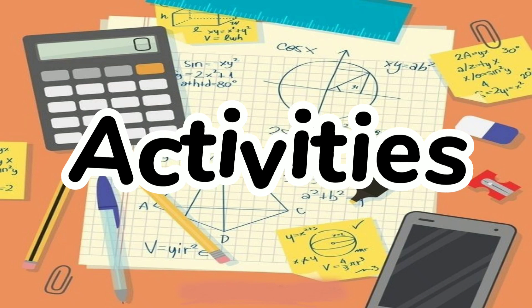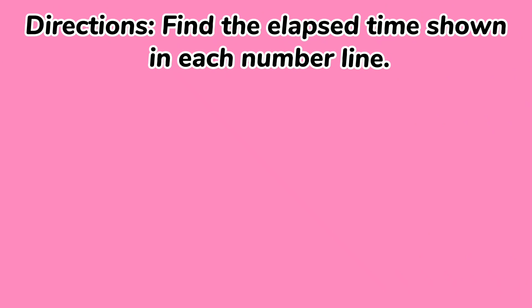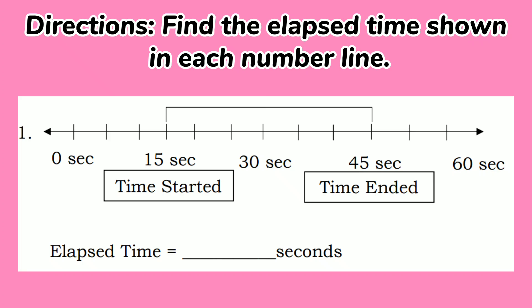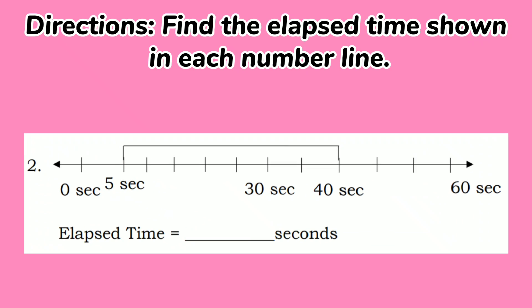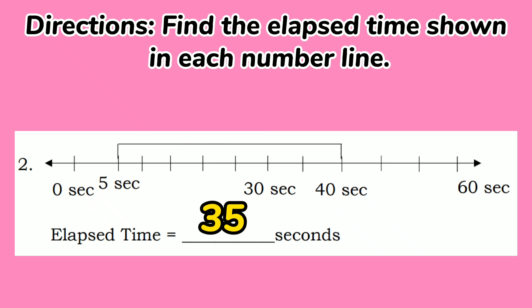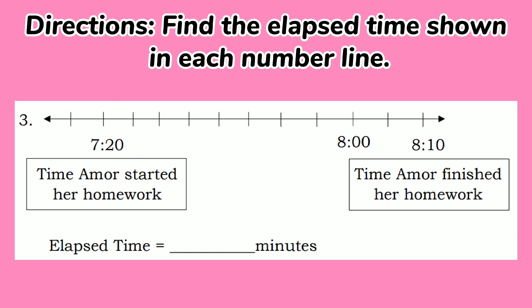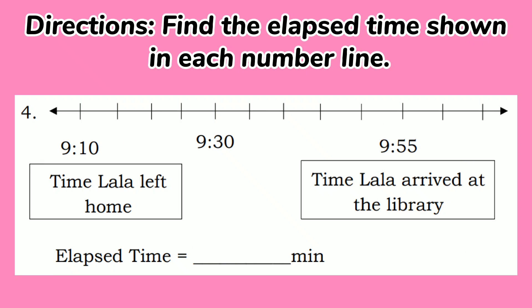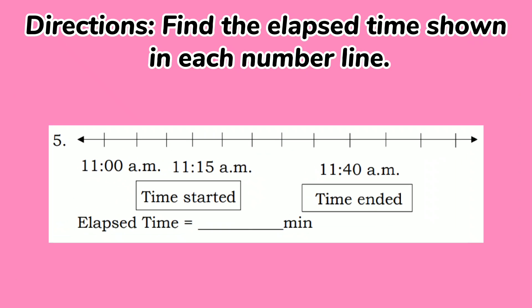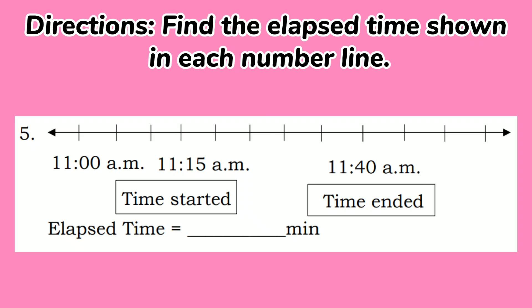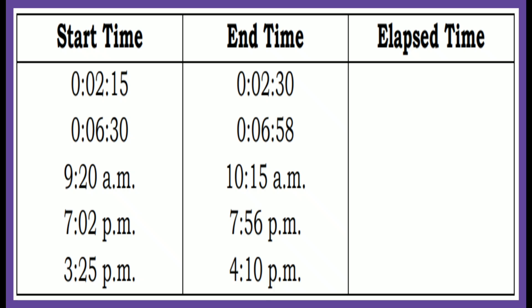Now that you already know how to find the elapsed time, let's have these activities. For your first activity, find the elapsed time shown in each number line. Number 1: from 15 seconds to 45 seconds, the elapsed time is 30 seconds. Number 2: the answer is 35 seconds. Number 3: from 7:20 to 8:10, the elapsed time is 50 minutes. Number 4: Lala left home at 9:10 and arrived at the library at 9:55 — the elapsed time is 45 minutes. Number 5: from 11:15 to 11:40, the elapsed time is 25 minutes.